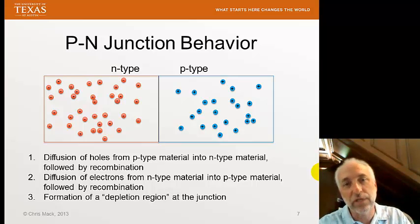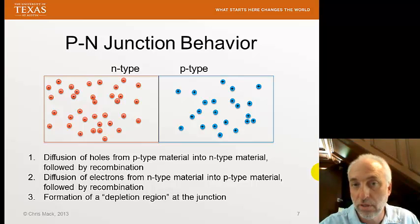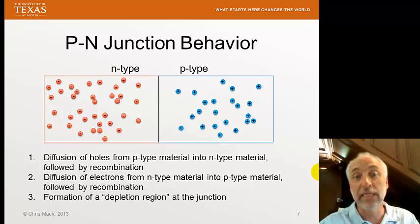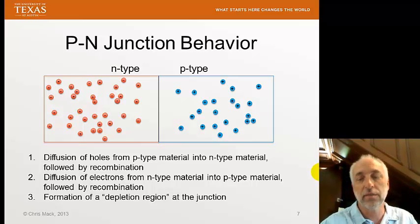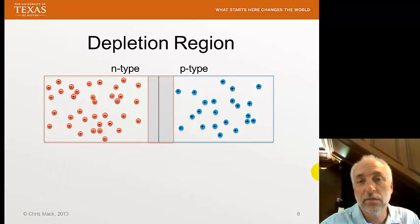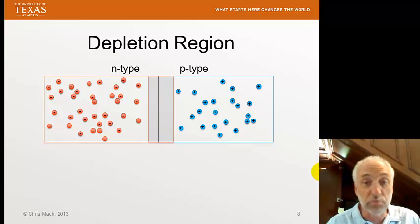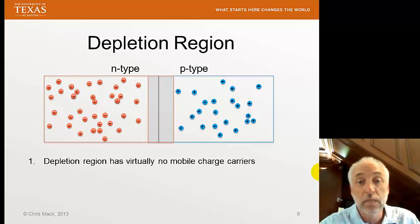These charges move to the other side where they'll be the minority carrier, find a member of the opposite sign, and recombine. That means in the region surrounding the junction, holes and electrons are going to disappear. They're going to be depleted as they recombine, forming what is called a depletion region surrounding the junction — a region where mobile charge carriers are essentially depleted.